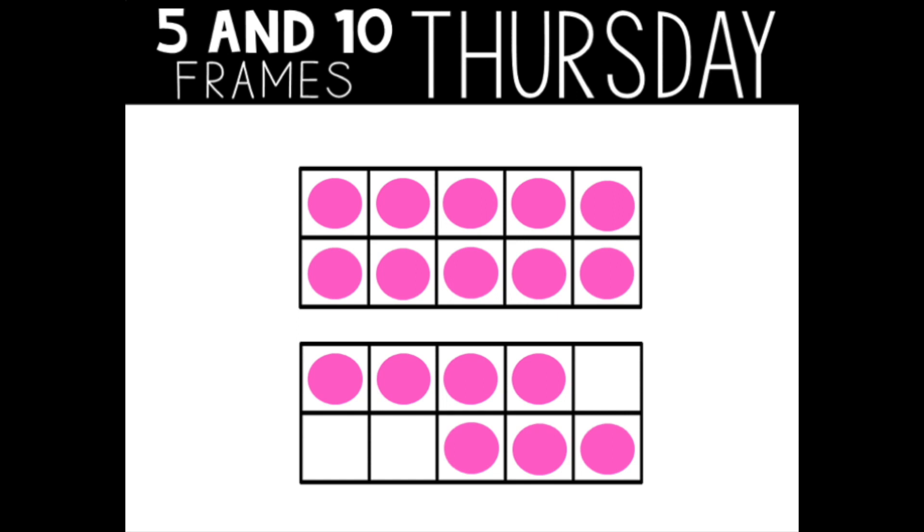I'm going to use my strategy of tens and ones. One group of 10 and seven lonely ones equals 17. Did you find your answer in a different way? Great job.